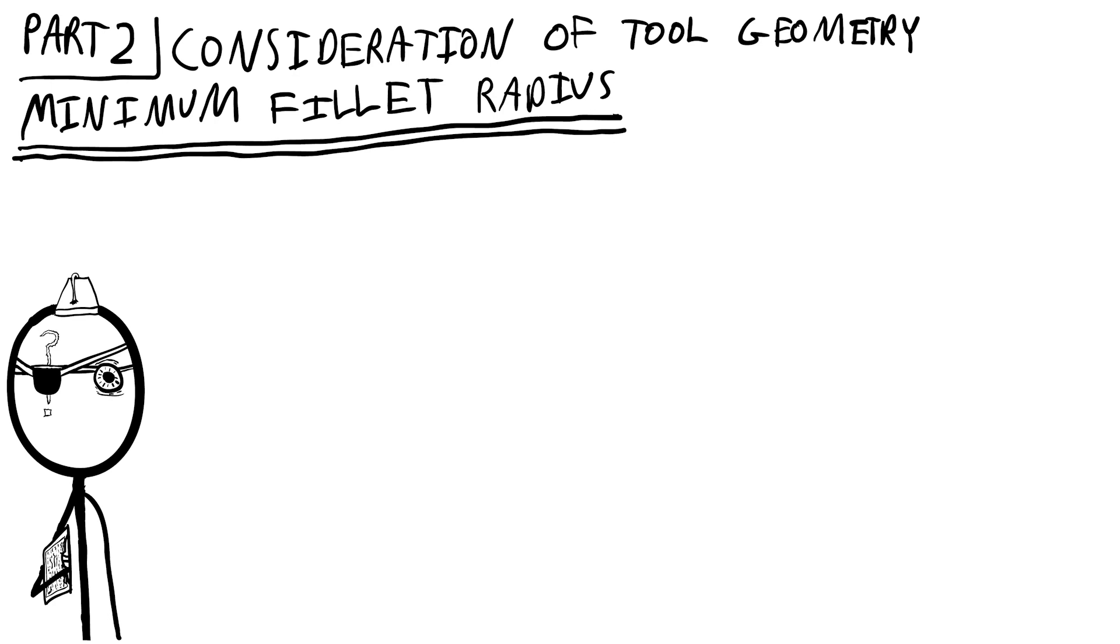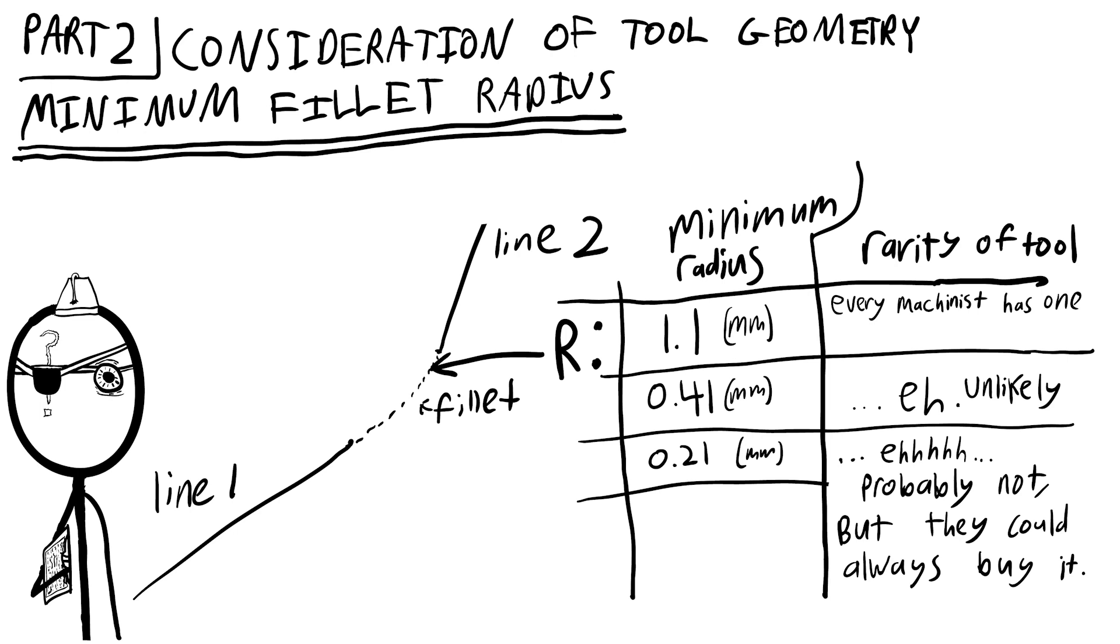In order to avoid this problem, you must instead put a fillet in between the two lines. If you wish to be conservative and assume that the shop you have manufacturing your yoyo does not have many custom tools for this type of high-precision turning, utilize a minimum fillet radius of 1.1 millimeters. If you believe your manufacturer is either particularly well-equipped or is willing to invest in some more custom tooling for your yoyo design, you can either use a 0.41 millimeter minimum fillet radius or a 0.21 millimeter minimum fillet radius. If you can, ask your machine shop before you design such small fillets what the radius of their smallest carbide insert is.